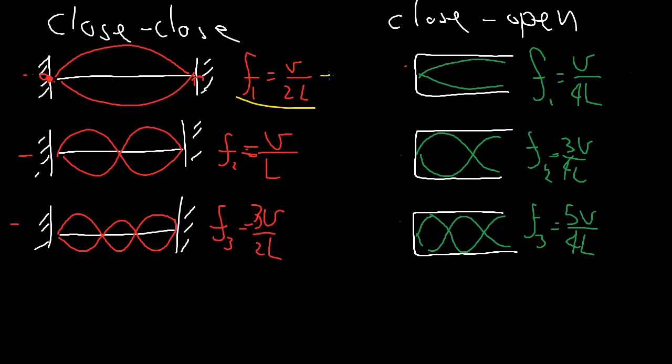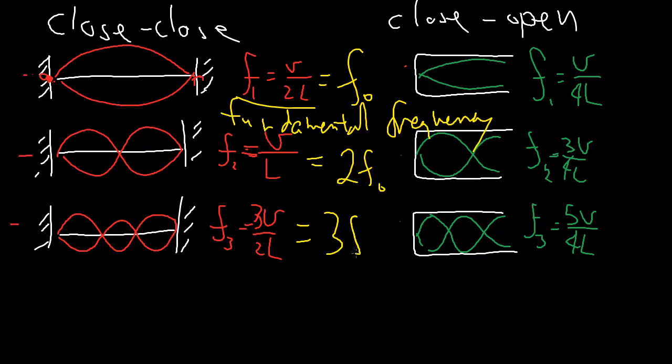If you notice, the lowest frequency here we call that F0 for the fundamental frequency. Then this guy, the next n equals 2 mode, has a frequency of twice the fundamental frequency, and then three times. So these are all integer multiples of the fundamental frequency, and that's why that frequency is so fundamental.